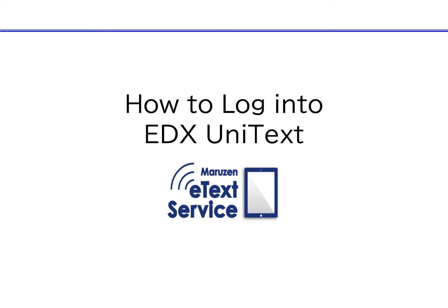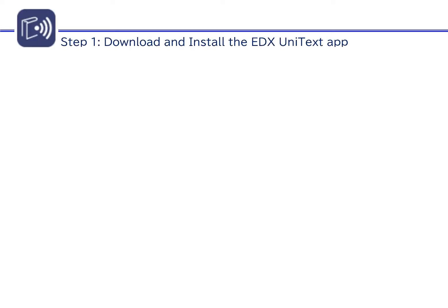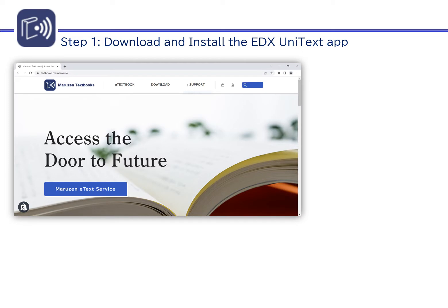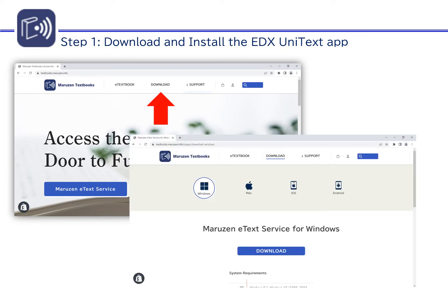How to log into edX Unitext, the viewer app for Maruzen eText service. Start by downloading and installing the edX Unitext app. Open the download page on the Maruzen Textbooks website and click download. Please make sure to download the appropriate version for your device, then follow the steps to install the app.